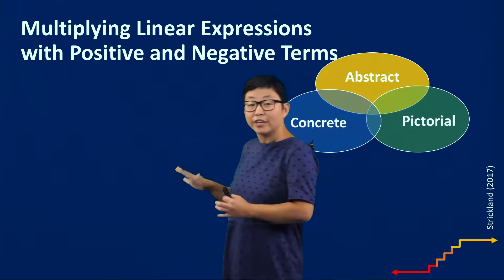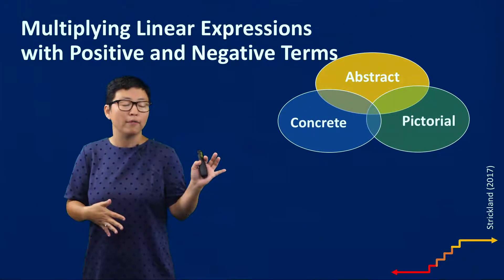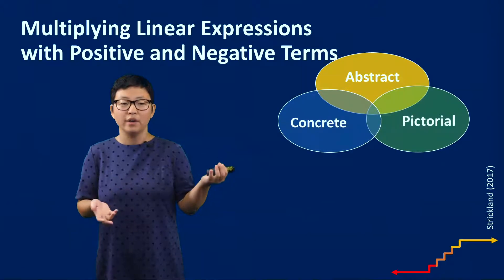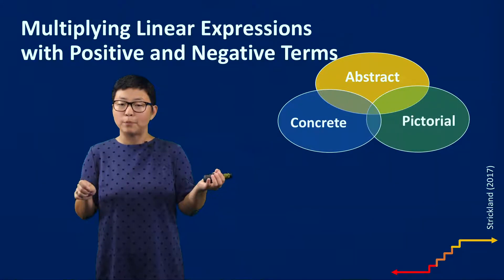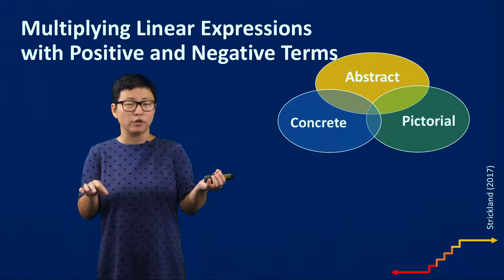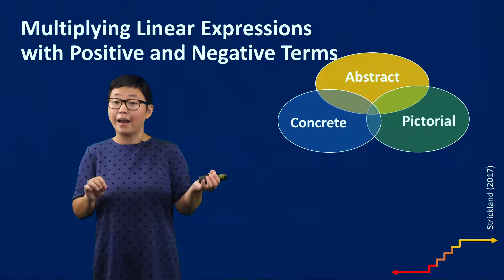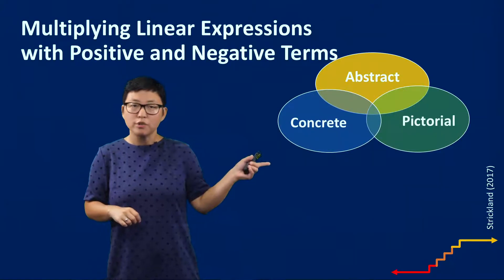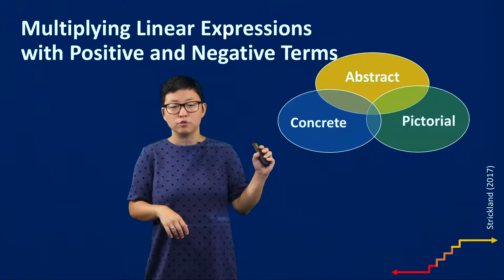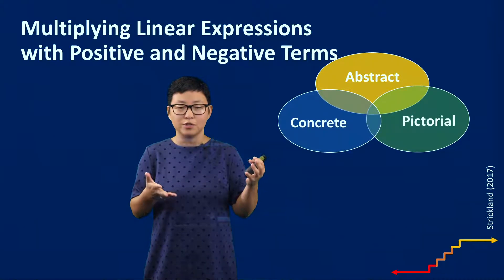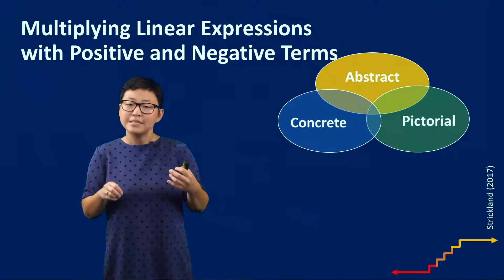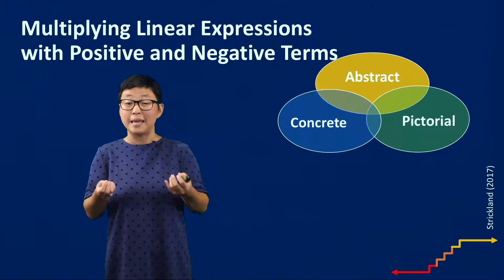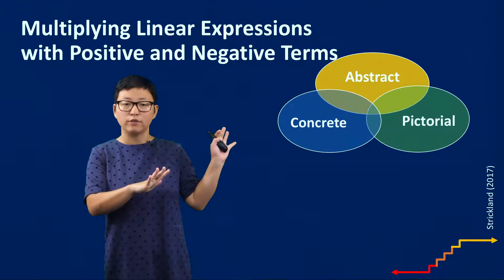Before we get started and looking at the modeling, let's talk first about representations and why we're drawing on this research from Trisha Strickland and her 2017 piece about the concrete representational abstract integrated model or CRAI. It's also known as concrete pictorial and abstract and you might hear both of those terms used but they really mean the same thing. The idea here is that students have the opportunity to represent the same mathematical notion but with different representations.